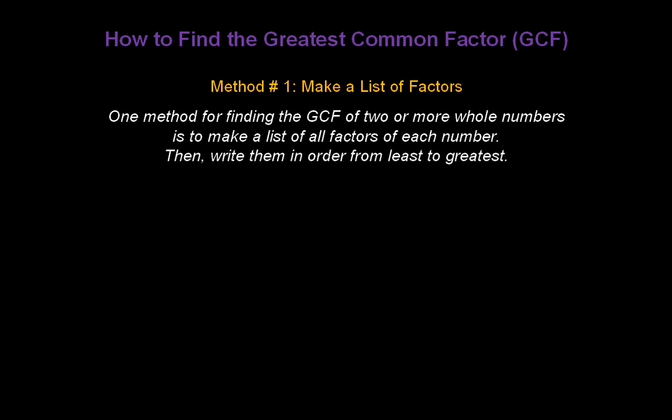I'm going to show you two of the best methods I know of for finding Greatest Common Factor today. One method is to make a list of all factors of each number, then write them in order from least to greatest.